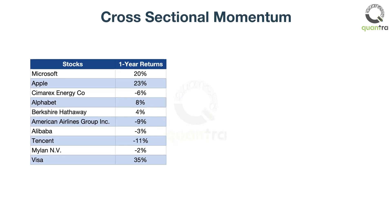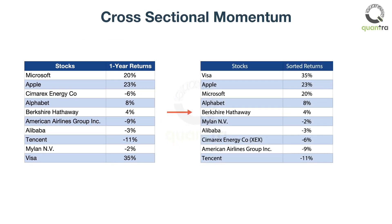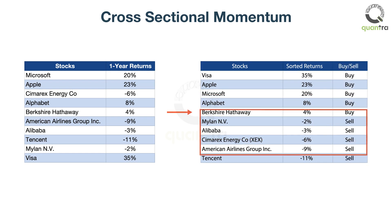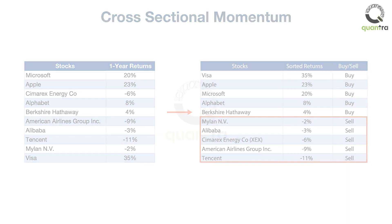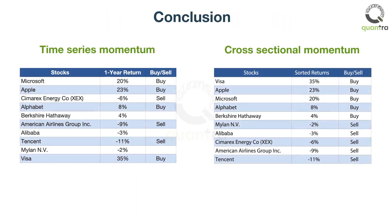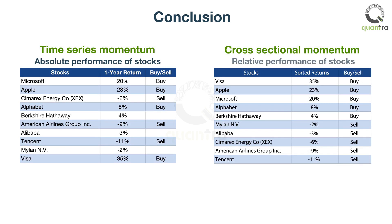In cross-sectional momentum, you rank all stocks in a portfolio in descending order based on returns over one year. You buy the top five stocks and sell the bottom five stocks. You can observe that in time series momentum, we used absolute performance of stocks over some prior period, while in cross-sectional momentum, we used relative performance of stocks over some prior period.